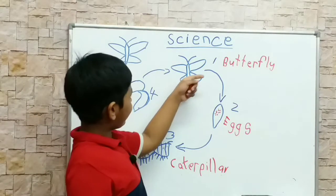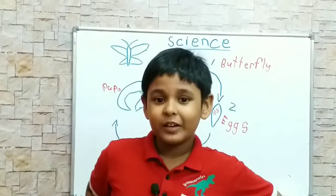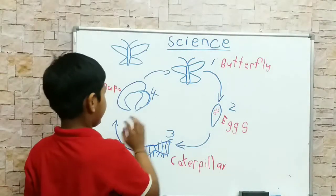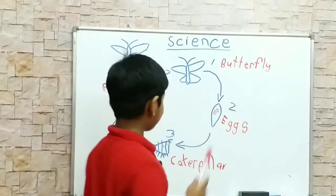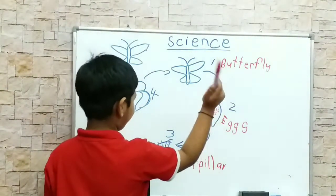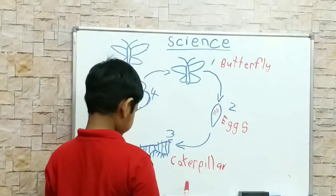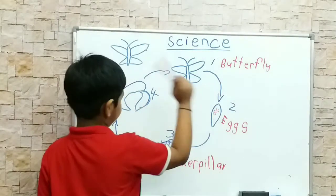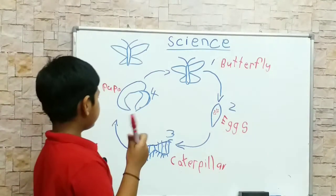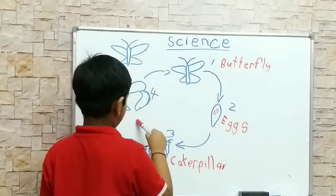Now go to number one is butterfly. And you already know this butterfly, you know the number. So today you know what butterfly science is — butterfly, and eggs, and caterpillar, and pupa, and butterfly.